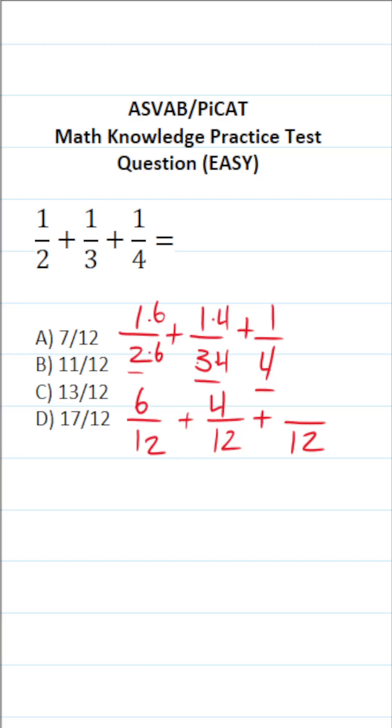And finally, to write 4 as 12, we would have to multiply it by 3. We're also going to do that to its numerator. 4 times 3 is 12. 1 times 3 is 3.